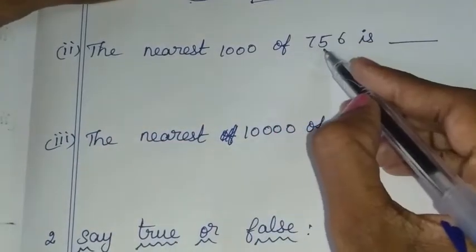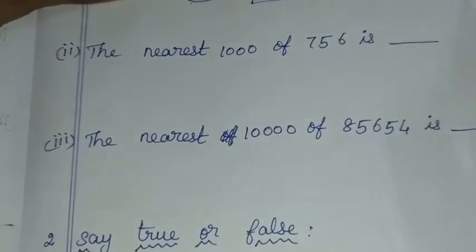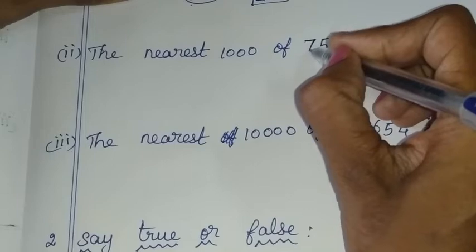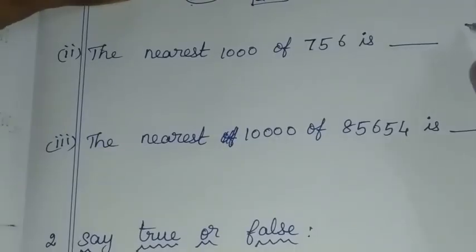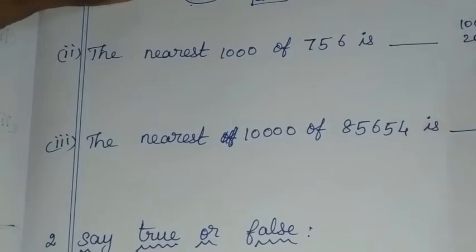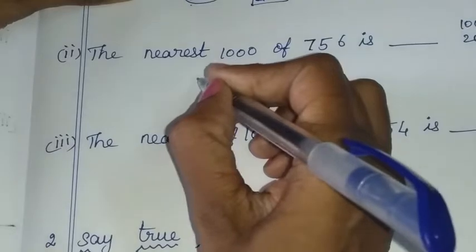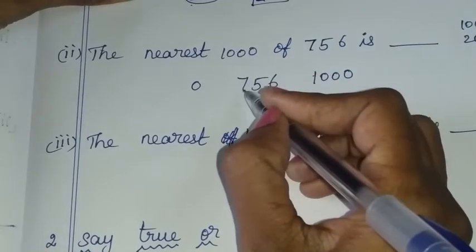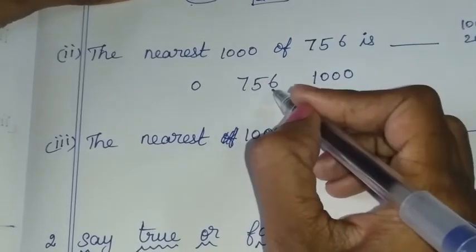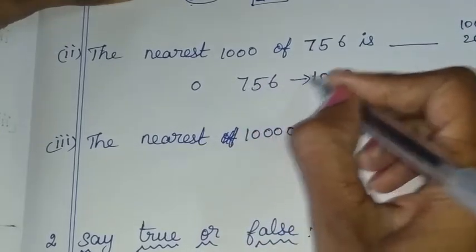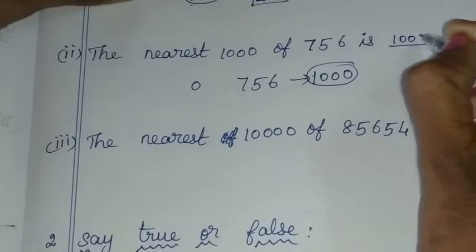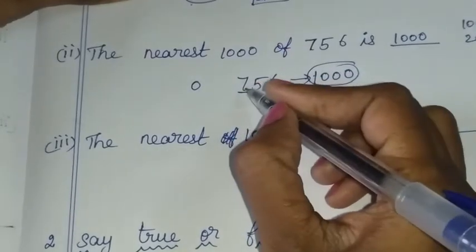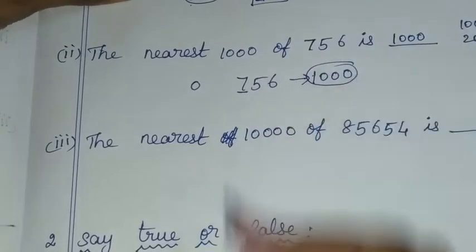The nearest thousand of 756 — the thousands are 1,000, 2,000, 3,000. Half of 1,000 is 500. For 756, we check: 756 is greater than 500, so we round up to the greater number side, and the answer is 1,000.